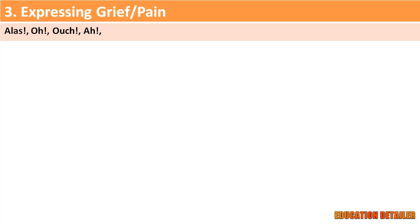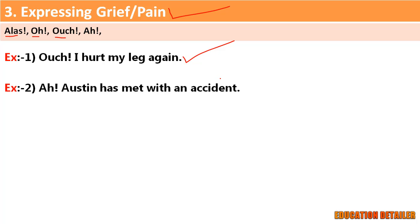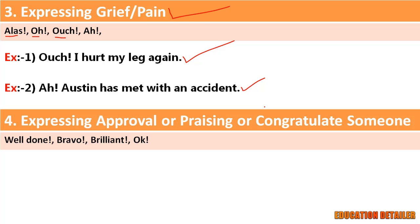Third, when we express grief or pain in an unfortunate event, we use interjections like alas, oh, ouch, etc. For example: 'Ouch, I hurt my leg again!' and 'Ah, Austin has met with an accident.'